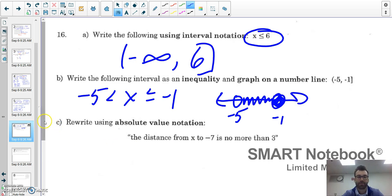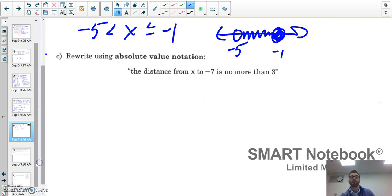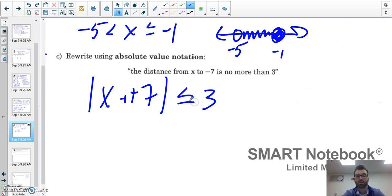Rewrite using absolute value notation. Remember distance is always measured, it's always going to be a positive number. The distance from x to -7 is no more than 3, so absolute value of x - (-7), and no more than means 3 is the most it can be, so I'm going to include 3 and everything less than 3: |x + 7| ≤ 3.